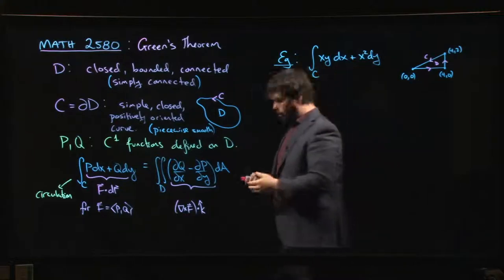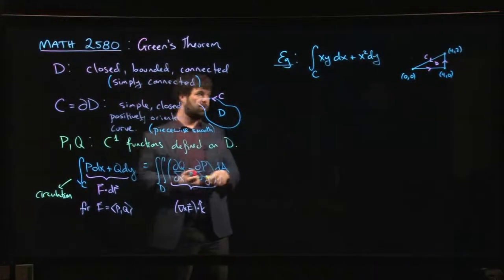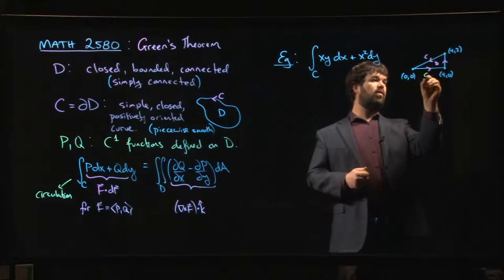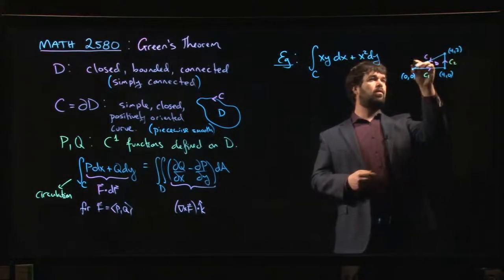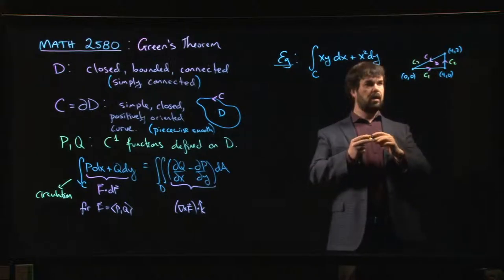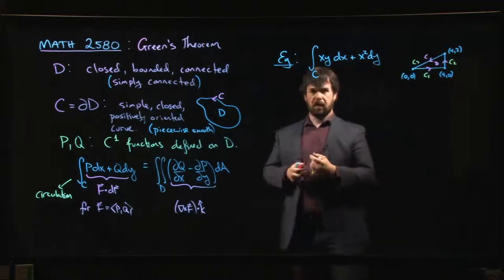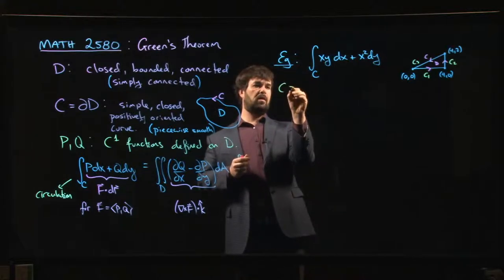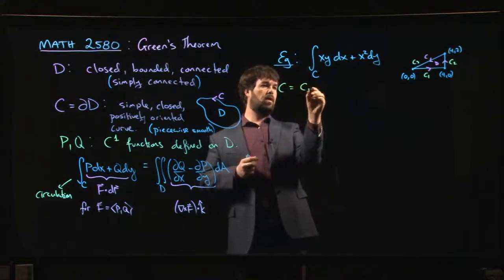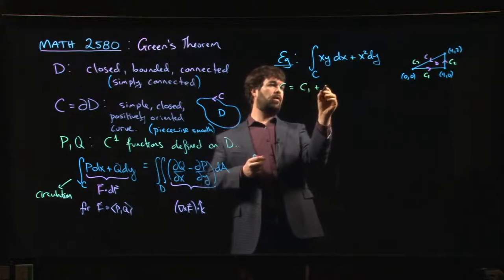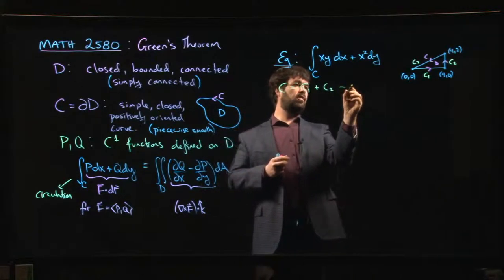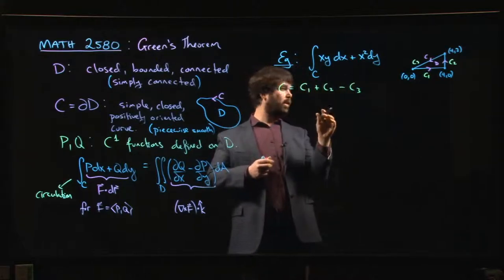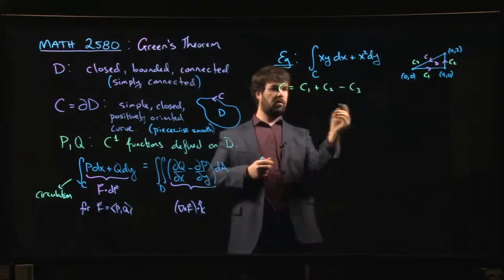So we have two ways that we could tackle this. We could try to do it directly. So we could think of this as c1, c2, c3. And you might even say, let's think of C as c1 plus c2 minus c3, where we take the following parametrizations for these curves.